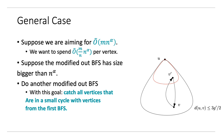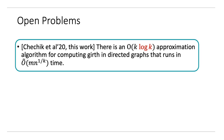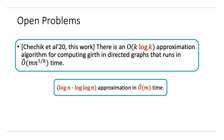I want to close with one open problem. Cechik et al. and our paper showed a K log K approximation algorithm for computing girth in directed graphs in MN to the 1 over K time. This log K factor seems unnecessary — you can see the oddness of this factor when you consider linear time, where this result gives log N times log log N as an approximation factor, which does not seem optimal. So the next improvement would be getting rid of this log K factor, or rather unexpectedly showing that it is indeed needed. Thank you for listening to my talk.